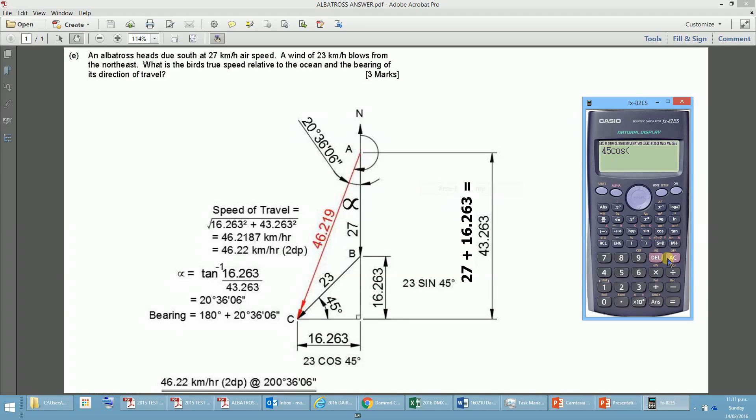clear, all clear, 23 times cosine 45 equals, and this will give it to us in decimals, 16.263.